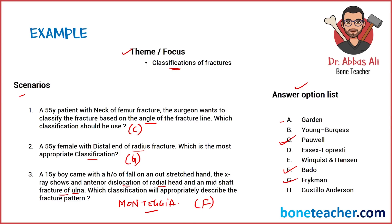If you get a scenario correct, you get a positive mark, and if you get it wrong, you get a negative mark. That mark is divided by the number of scenarios. So if there are three scenarios and you get one correct, you get plus one-third; if you get one wrong, it is minus one-third. If there are two scenarios, it's plus or minus one-half. And if there is only one scenario, it's plus one or minus one.